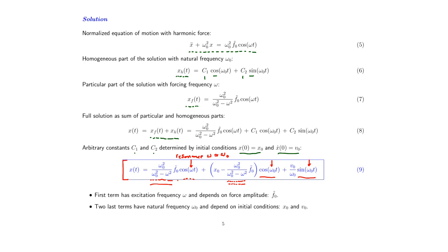The two initial conditions appear in the two latter terms, and if we start with an undeformed structure at rest, these cancel because initial displacement and velocity are often 0. In many cases with excitation on a dynamic structure, the initial conditions are considered to vanish, because we are often interested in very long loading scenarios — maybe 10 minutes of harmonic load — where after a couple of minutes it doesn't matter how the initial conditions were. So it is commonly accepted to set initial conditions equal to 0.